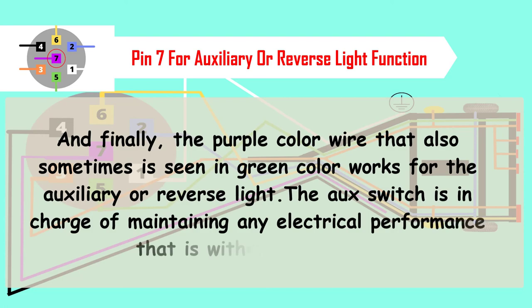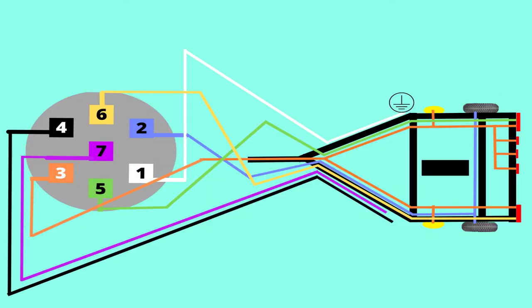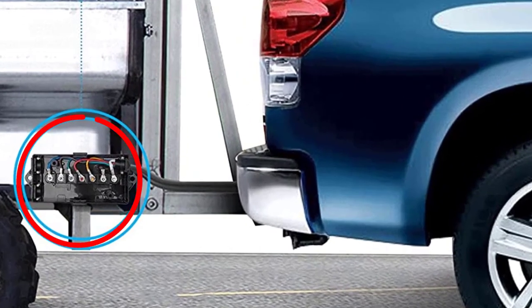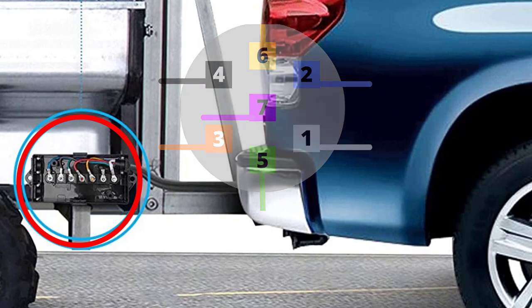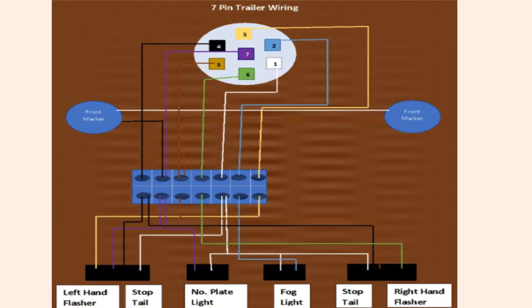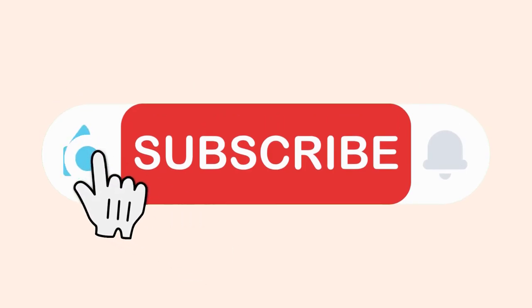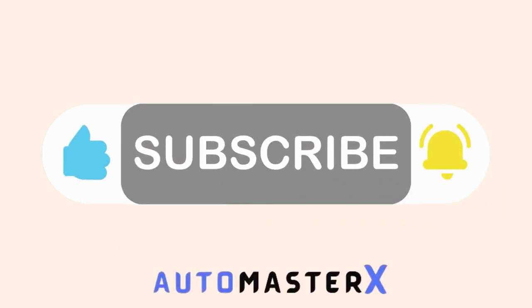That basically sums up the explanation for all the wires of Ford 7 pin trailer. Hope you got some idea. Do subscribe to our channel and hit the bell icon for more such automotive guides.